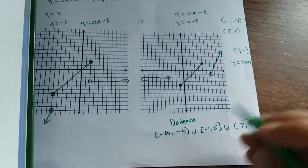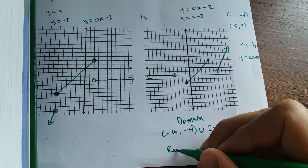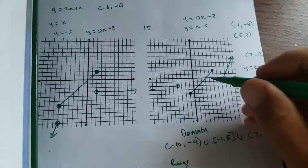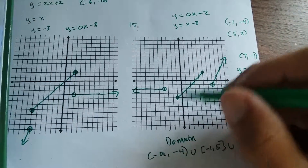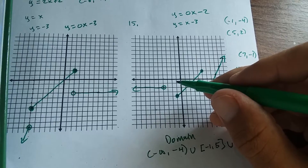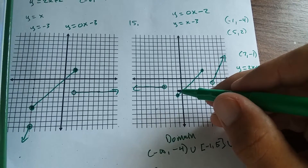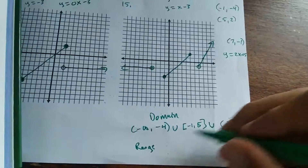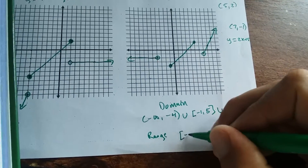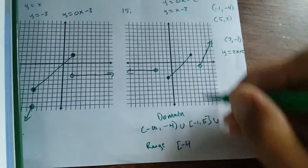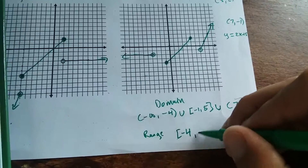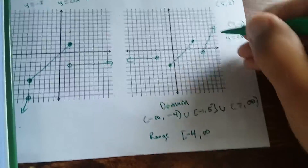For the range: how far down you go is your least value, which is negative 4 — and we're including it, so use a square bracket. Then it goes up to infinity because of the ray, so the range is negative 4 to infinity.